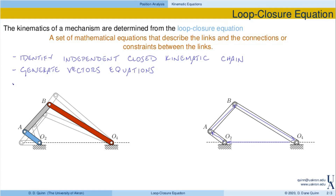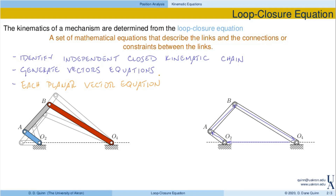So when we do this, we end up generating vector equations. Remember our lecture on vectors — vectors have magnitude and orientation, and so our vector equations essentially have terms that are all vectors. Now because there are vectors, and this becomes relatively important, each planar vector equation — so all of our kinematics that we're looking at currently are in the plane — provides two scalar equations.